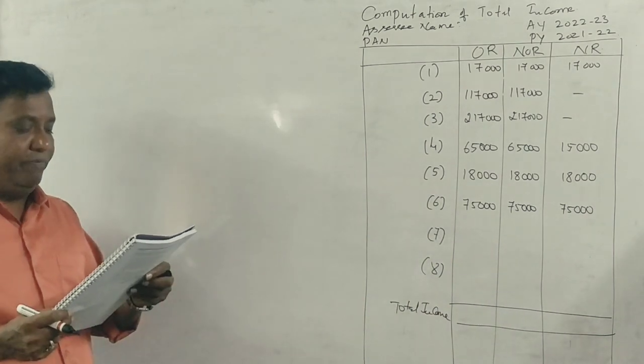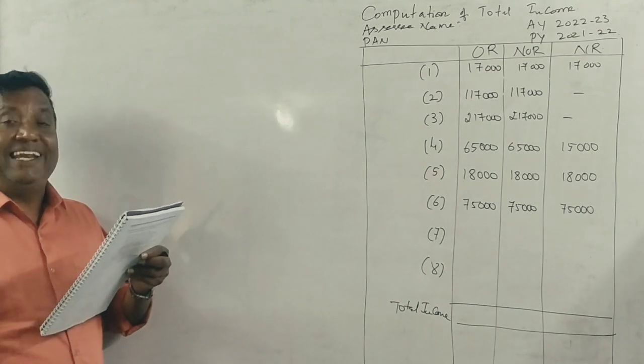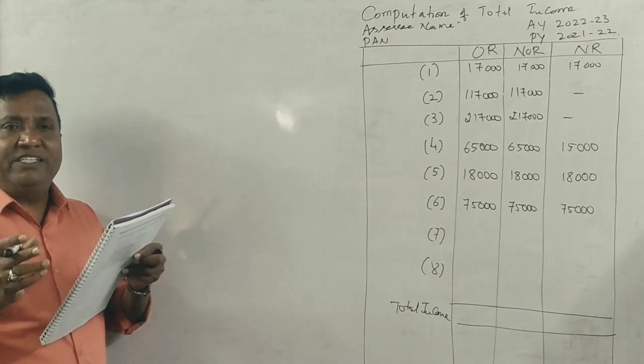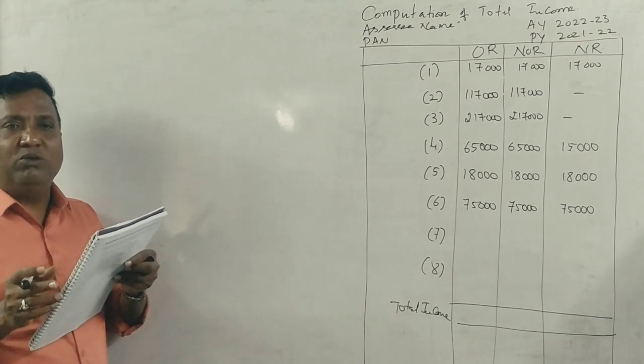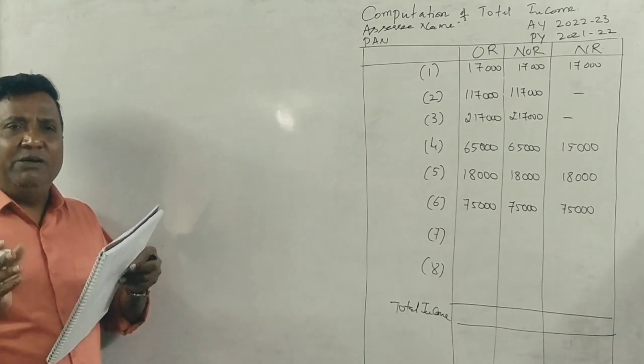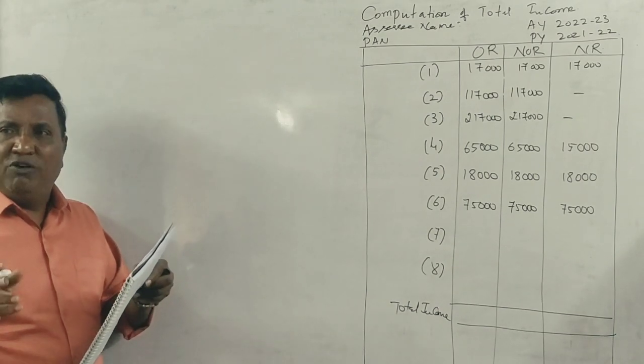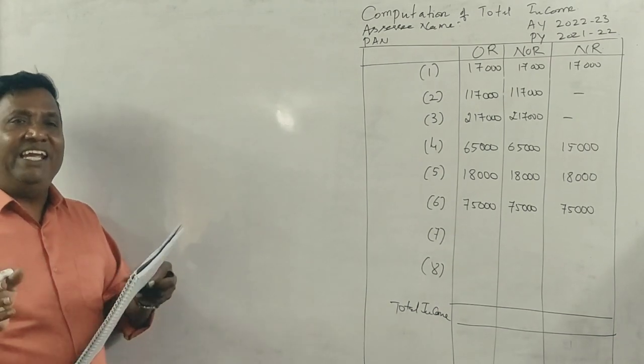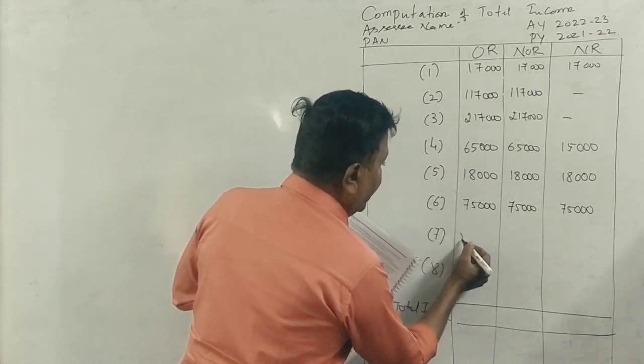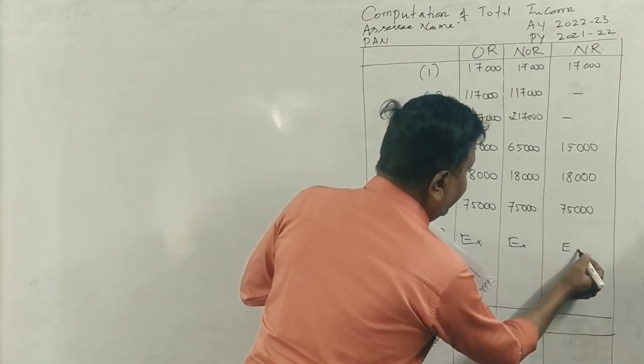Next point, cash gift received in India from a relative. That's very very important. Gift received in India from a relative is fully exempted. Any amount received as gift from a relative is fully exempted. Therefore, 8th point is exempted, exempted act.